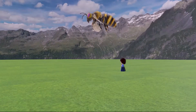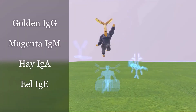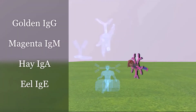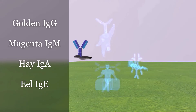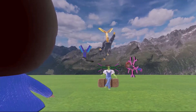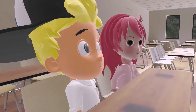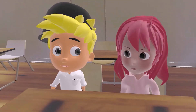Once the bee is activated, it's able to secrete various things. It can secrete the golden IgG, the magenta IgM, the IgA guy who's always sitting on the hay, and the IgEel for IgE. All of this is part of the story that I thought Sarah was making up, and of course I didn't believe it.